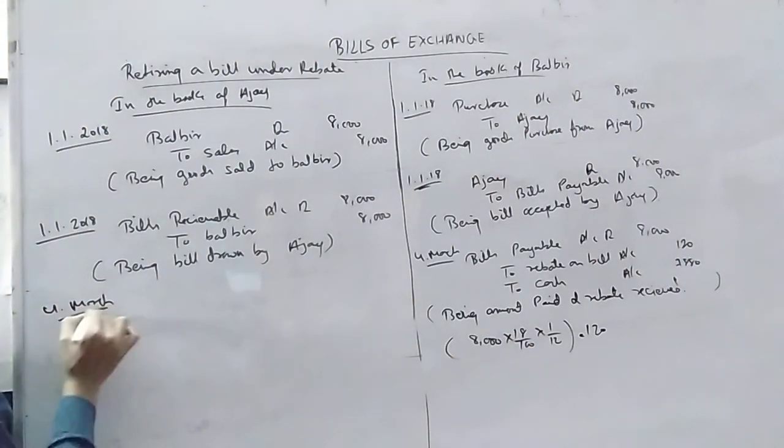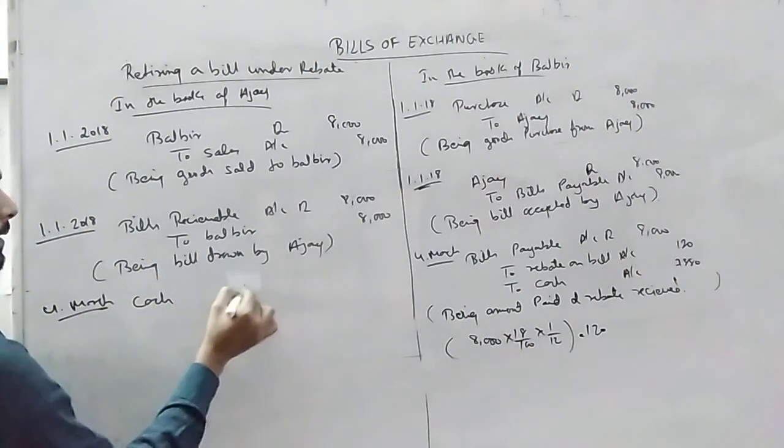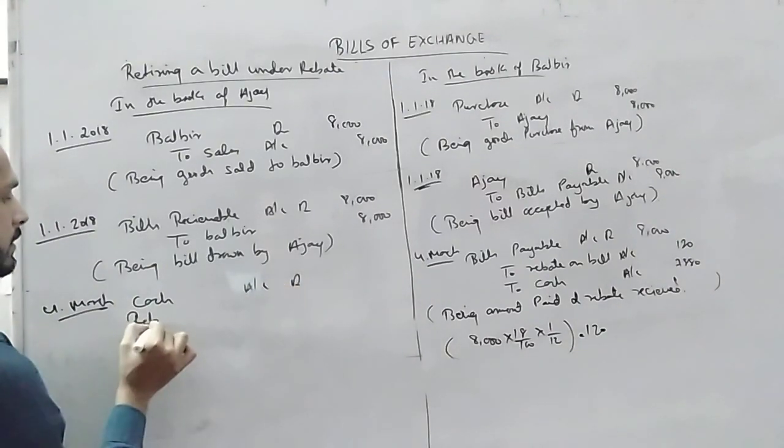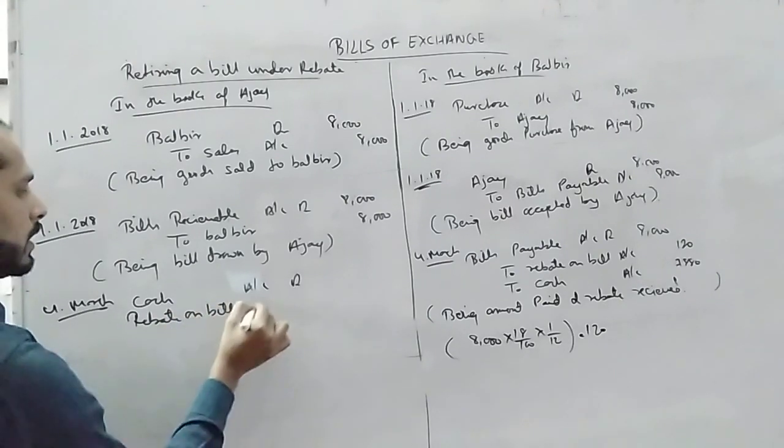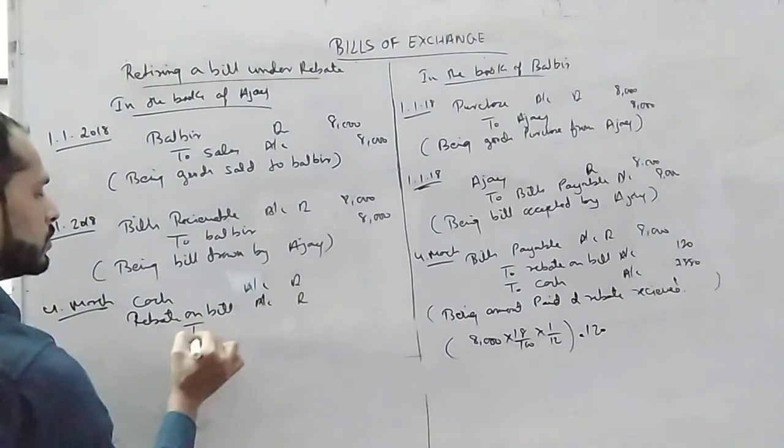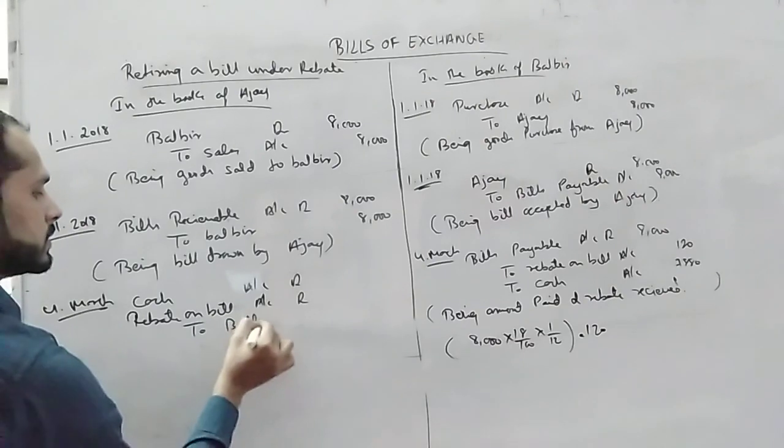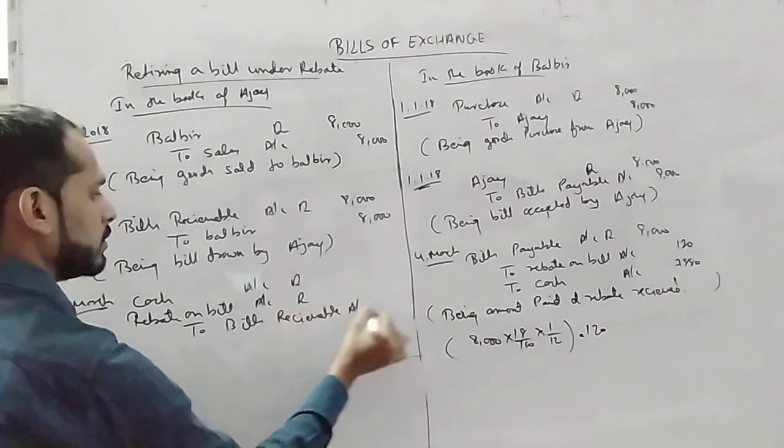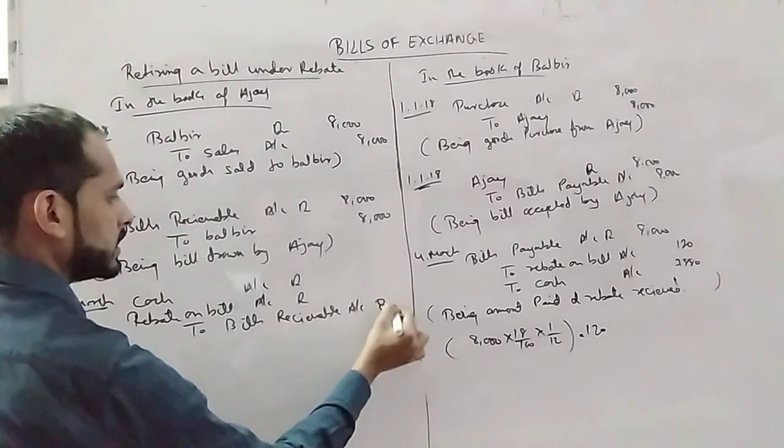This is 4th March. This is cash account debited, rebate on bill account debited to bills receivable account. Bill for 8,000.